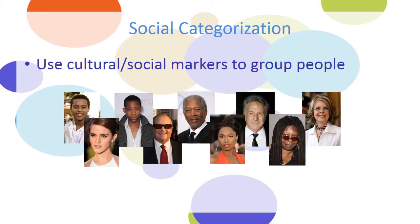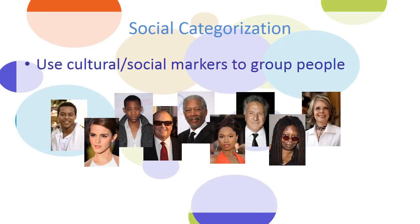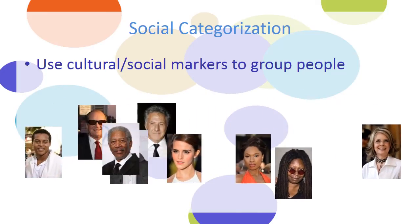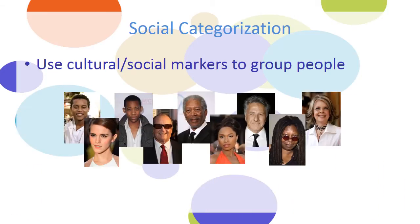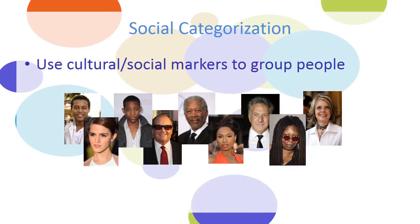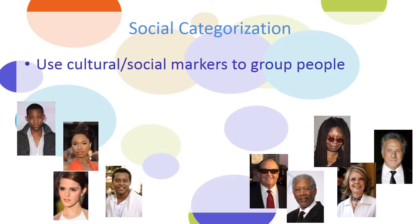One way we can categorize them is based on gender. We could also categorize them based on age. There are lots of different ways to group these people, and you can imagine that how we see people is going to influence whether we feel like they're a member of our in-group or our out-group.